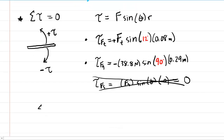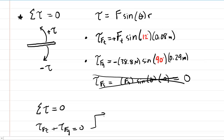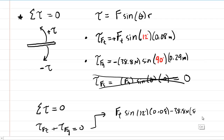Now we apply the sum of the torques equals zero. Taking the torque produced by F_t plus the torque produced by gravity and setting that equal to zero gives: F_t × sin(12°) × 0.08 − 38.8 newtons × sin(90°) × 0.29 = 0. Since sin(90°) equals one, we can simplify: F_t × sin(12°) × 0.08 − 38.8 × 0.29 = 0.